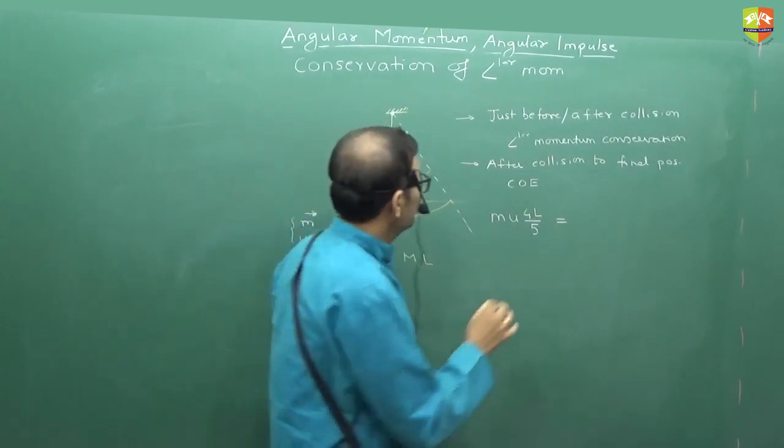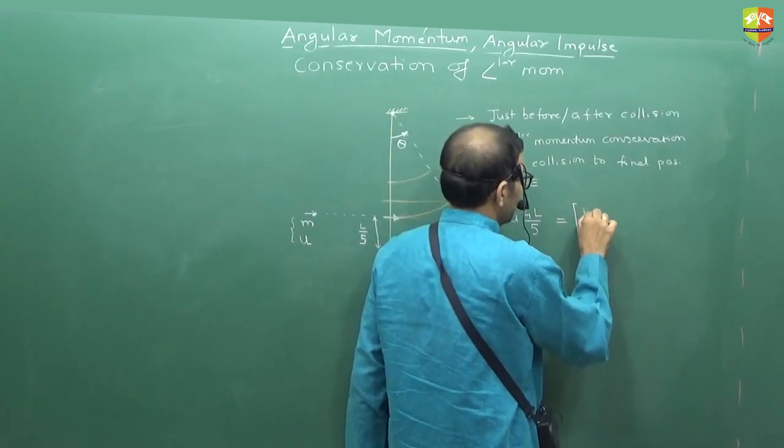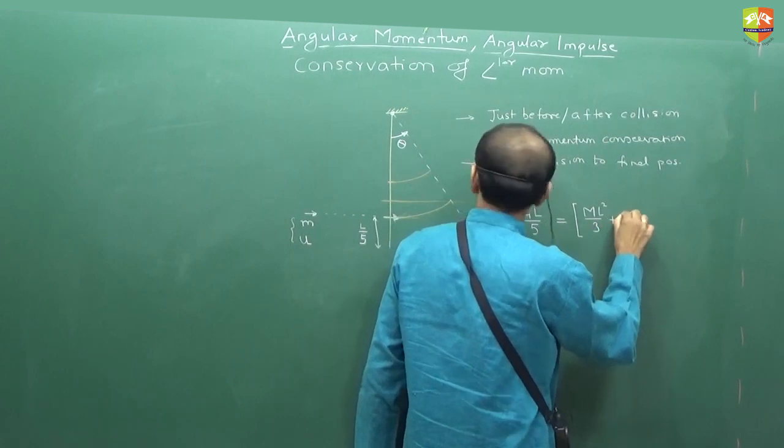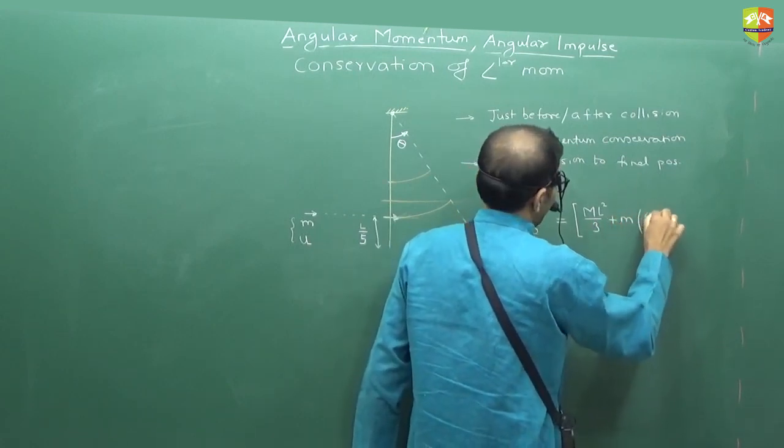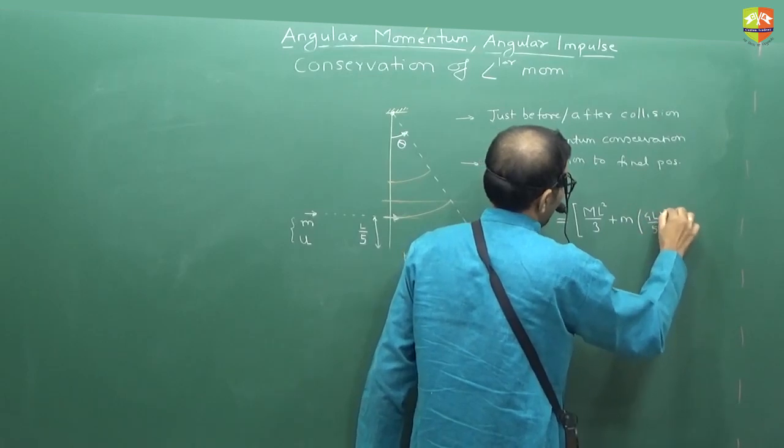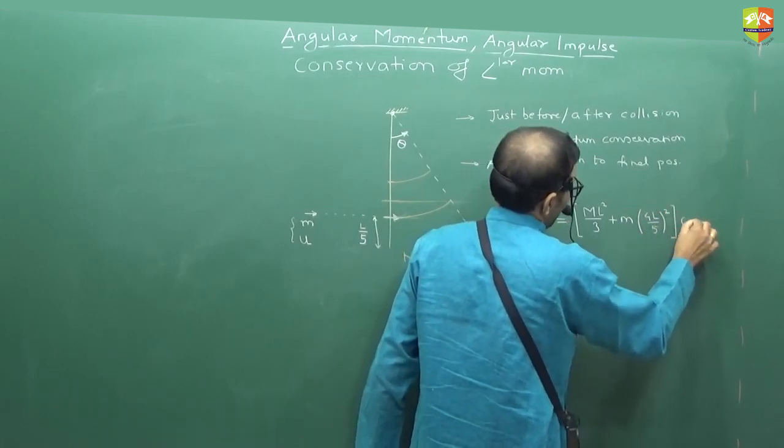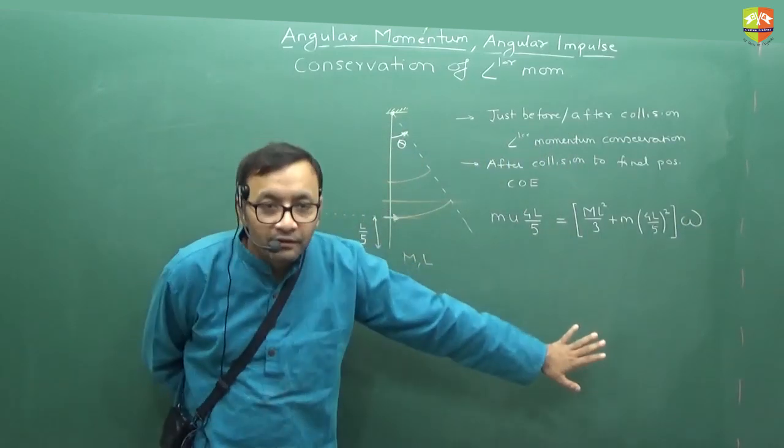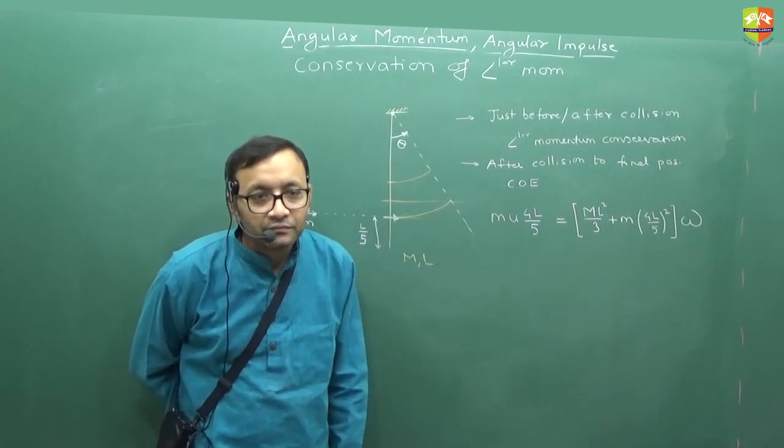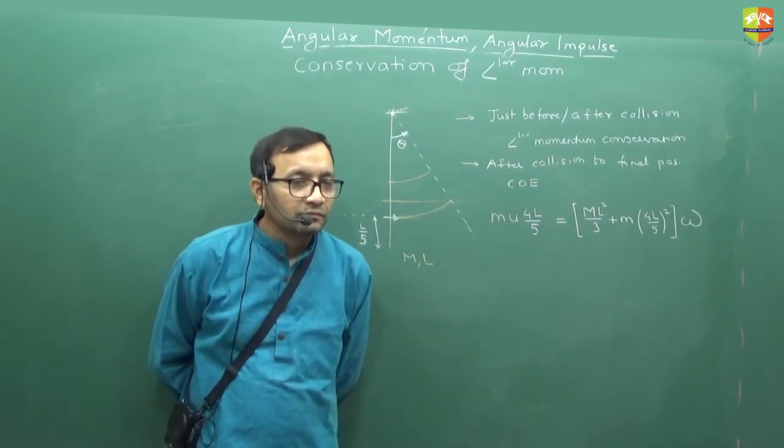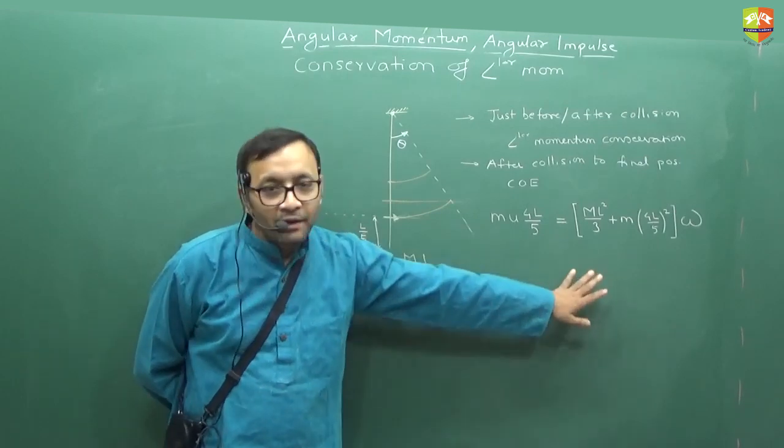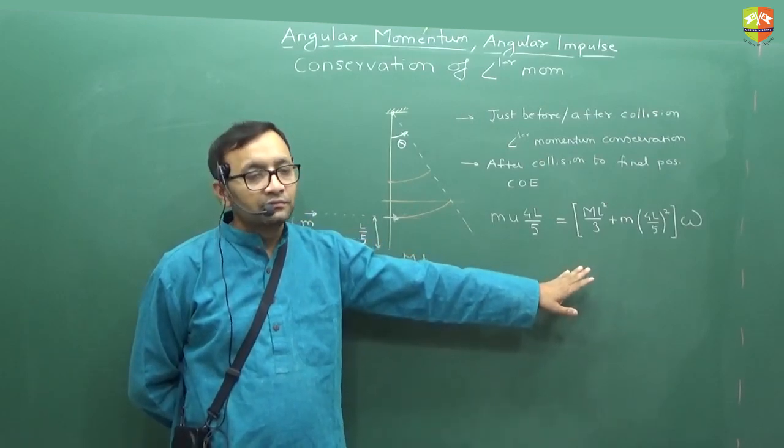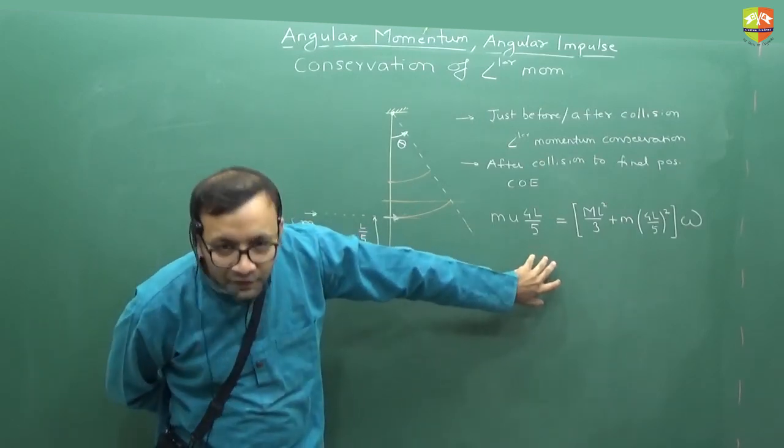What is the moment of inertia about the fixed axis? This is capital ML square by 3 plus small m into... Understood? This will give you omega. How many of you got this equation? Have you got this one? I am asking only that. Anybody else got this equation?